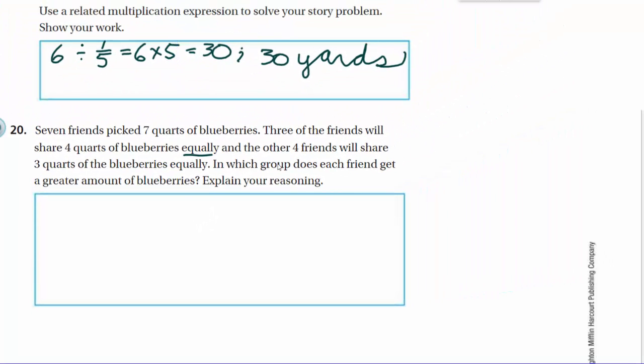I need to do some calculations. So 3 of the friends will share 4 quarts of blueberries. So if we have 4 quarts divide that by 3 friends, each friend can get 1 and 1/3. And then it says the other 4 friends will share 3 quarts. 3 quarts. I'm going to divide that by my 4 friends. That's 3/4. That's all they get. So in which group does each friend get a greater amount of blueberries? Explain your reasoning. The group with the 3 friends will get the most. This one.